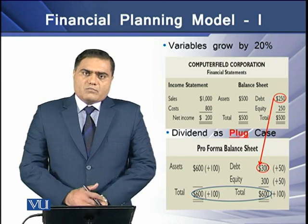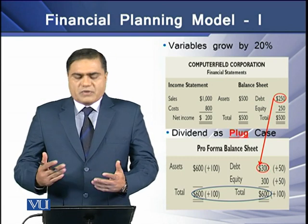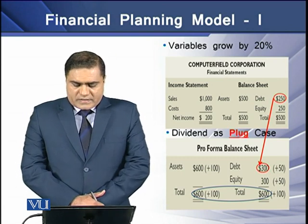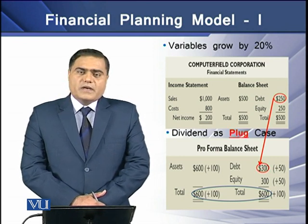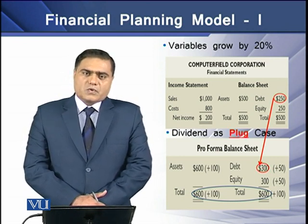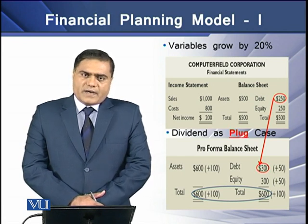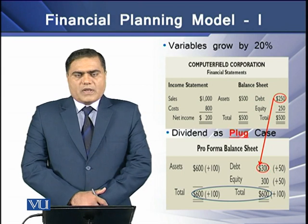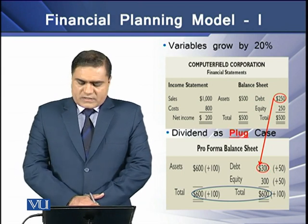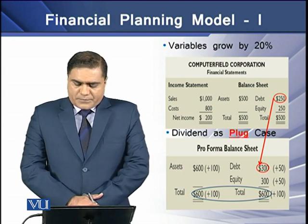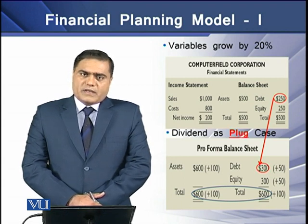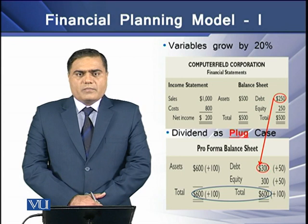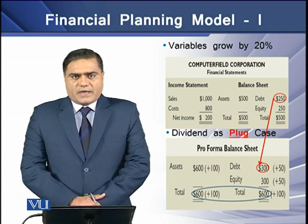Now we move every variable by 20%. On the screen, assets grow from $500 to $600 — an overall increase of $100 on the assets side. An equal increase would be on the liabilities side. With a 20% increase in debt, debt would be equal to $300.